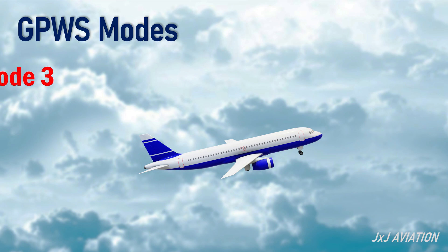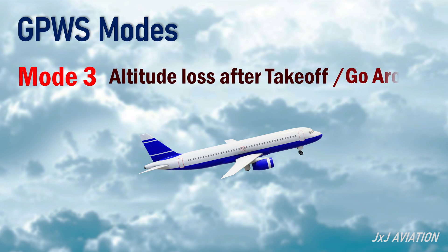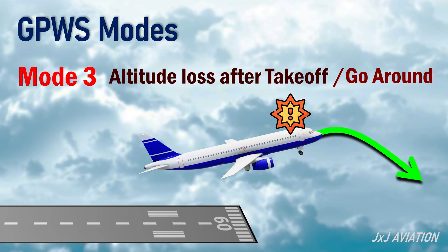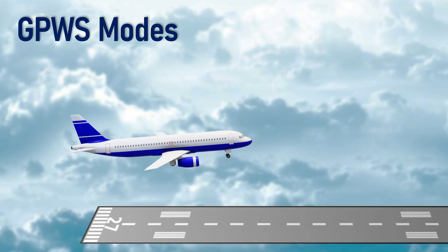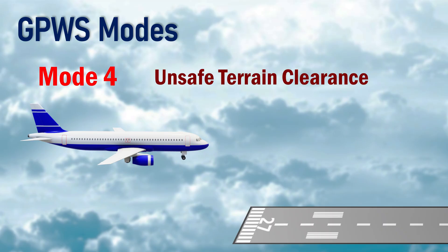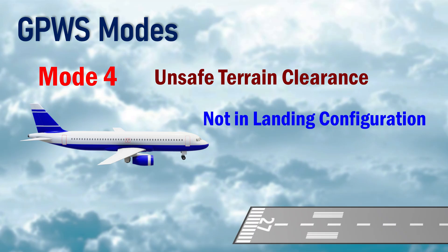Mode 3 is altitude loss after take-off or go-around. This alert is generated if an aircraft does not climb or loses altitude after take-off or during a go-around. Mode 4 is unsafe terrain clearance. This alert is triggered when an aircraft is close to the ground and not in the correct landing configuration. For this alert, the system monitors the flap setting and the landing gear position.